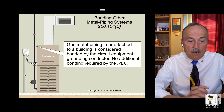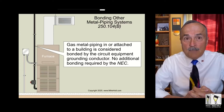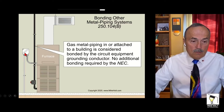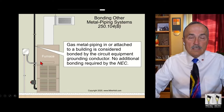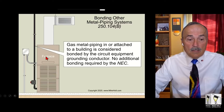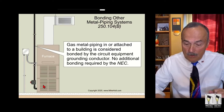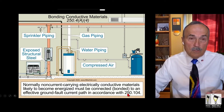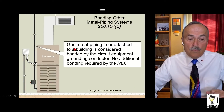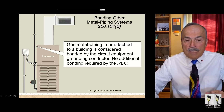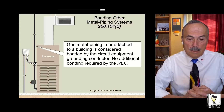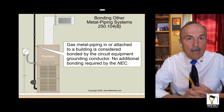The question is often about CSST — corrugated stainless steel tubing — gas piping bonding requirements. In the case of a furnace: you ran an electrical circuit to the furnace, so the non-current-carrying conductive parts of that metal furnace are likely to become energized. Per 250.104(B), gas metal piping in or attached to a building is considered bonded by the circuit equipment grounding conductor.